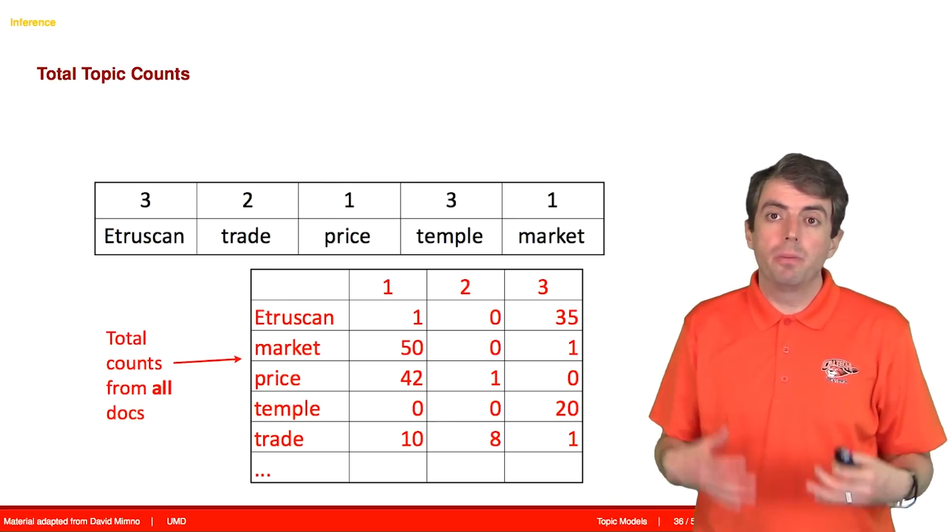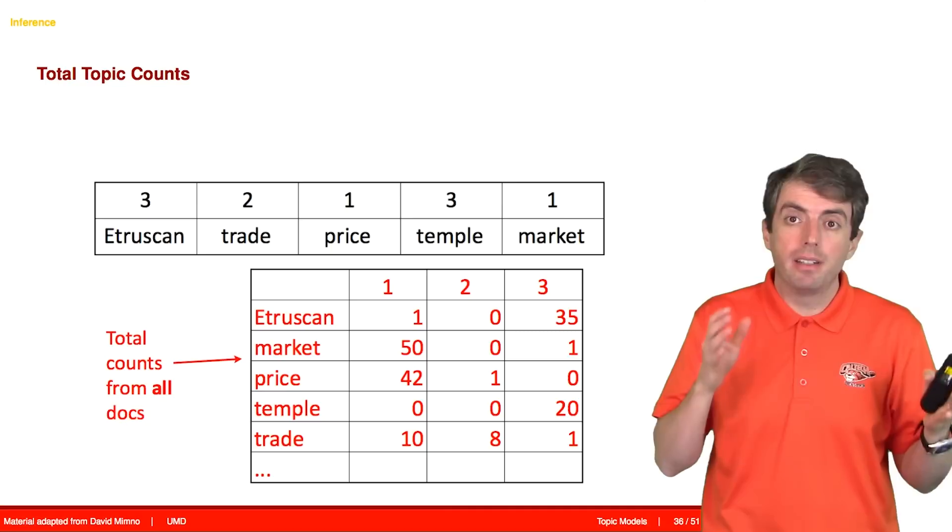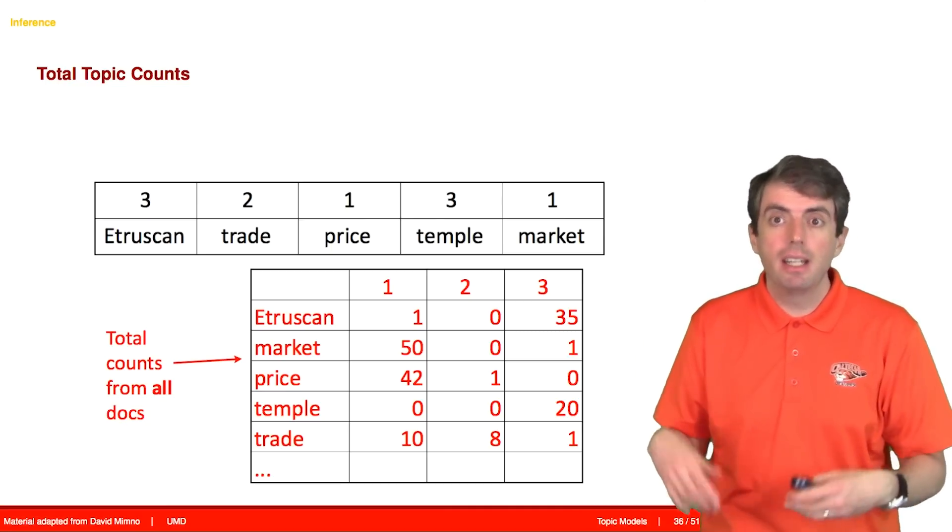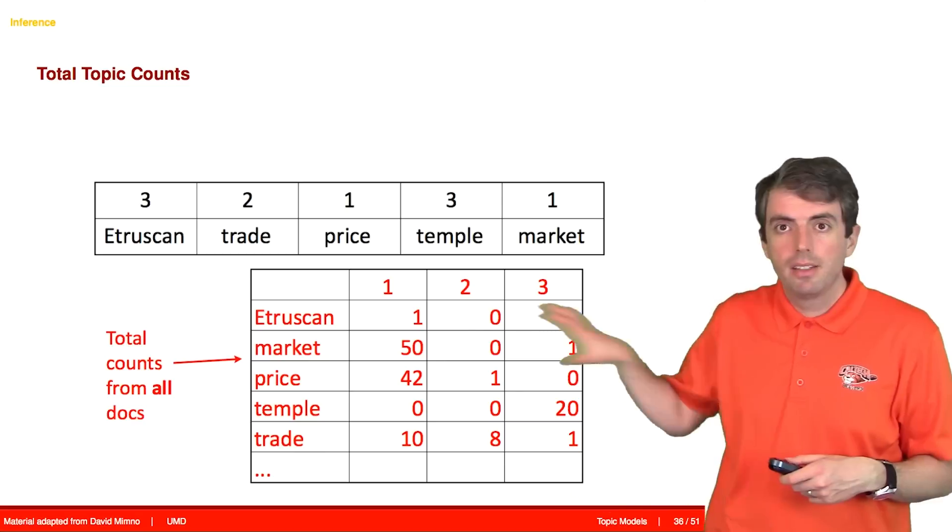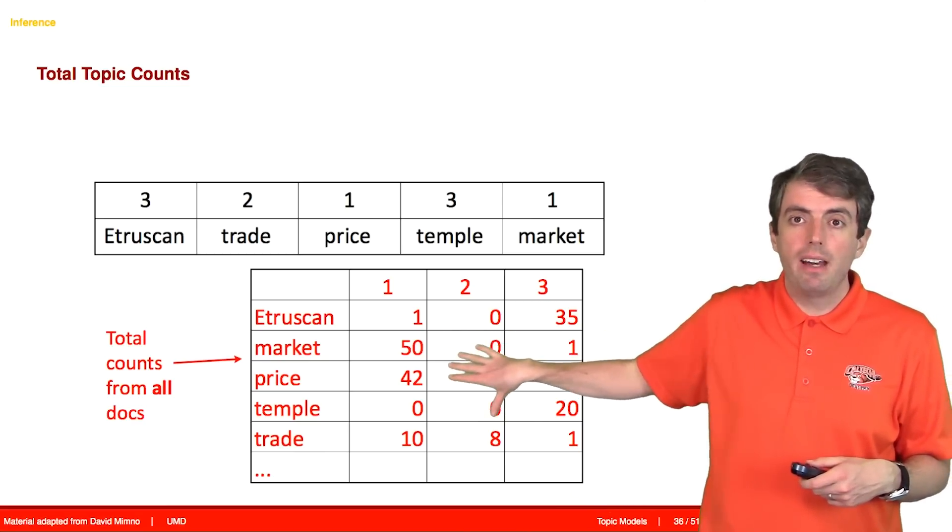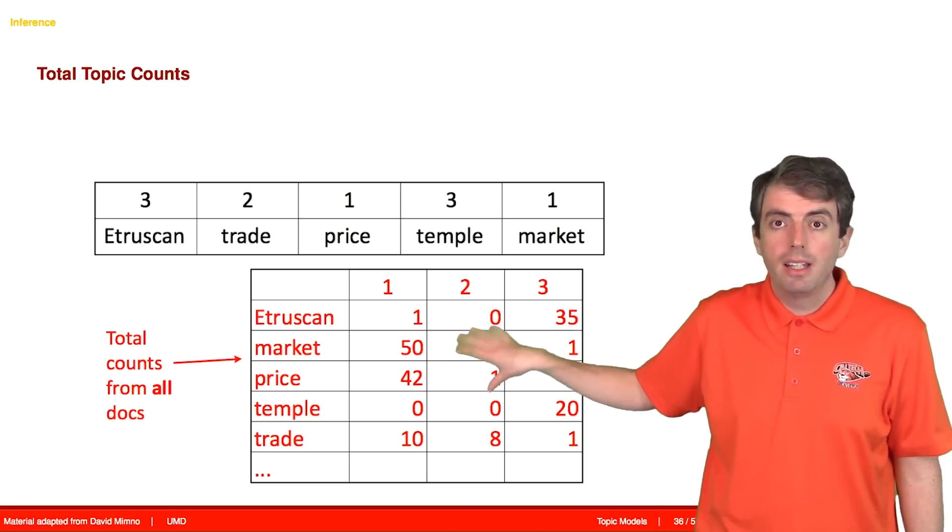So in the equation that I showed you, we have counts. Counts of how many times a document used a particular topic, and counts of how many times each topic used various words. So down here, we have the V counts that I showed you before.